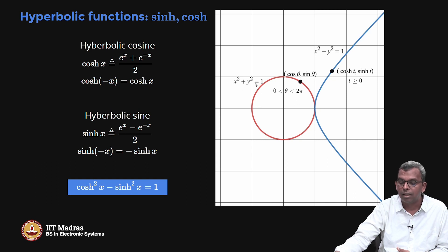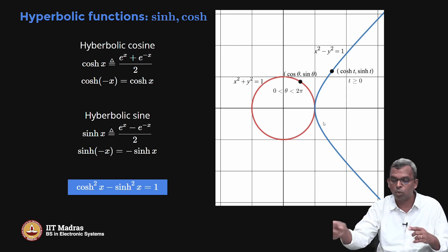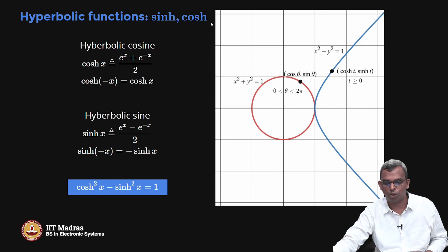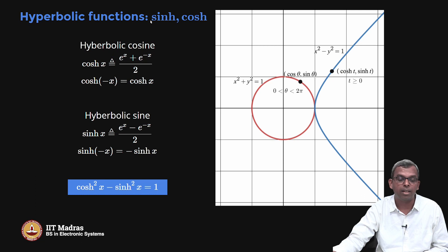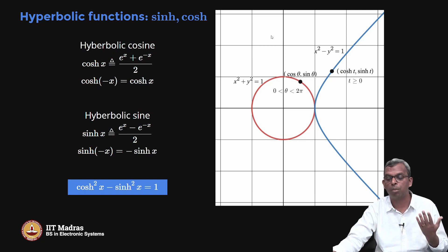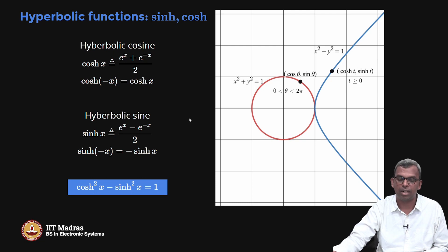Just like the circle, there is a curve called the hyperbola. Instead of x² + y² = 1, you have x² − y² = 1. The hyperbola has two sides. This is a part of the hyperbola: x² − y² = 1. And (cosh t, sinh t) for any t ≥ 0 is actually a point on this hyperbola — just as (cos θ, sin θ) is a point on the circle. That is why these are called hyperbolic sine and hyperbolic cosine.